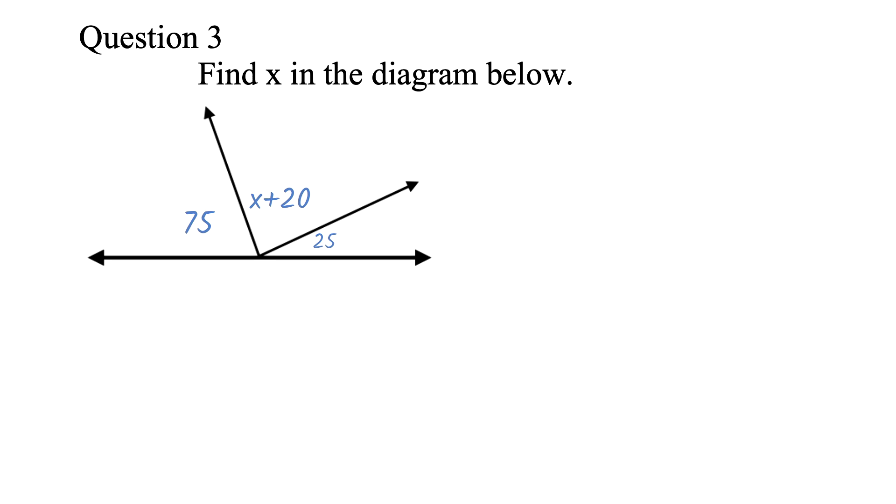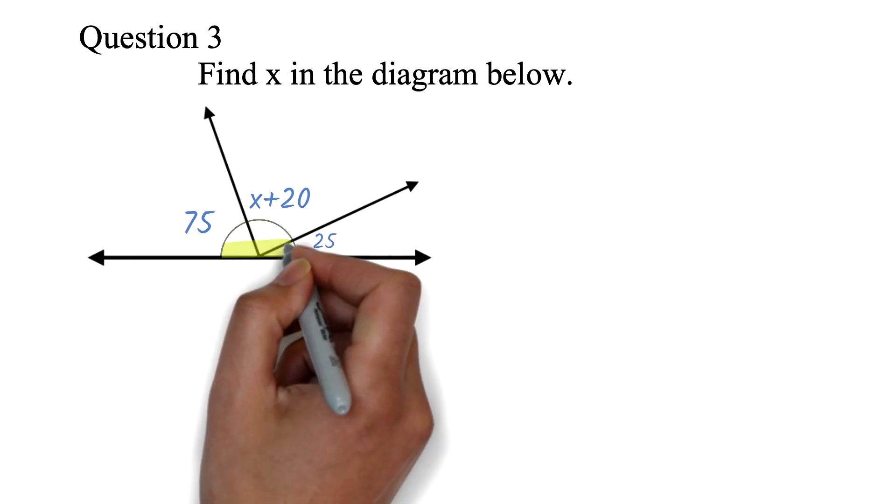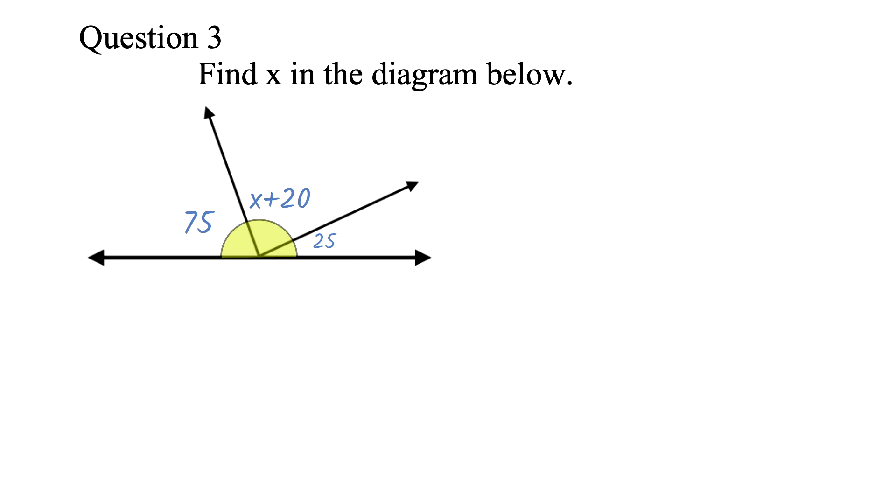Question 3. Find x in the diagram below. The work here is being able to identify that this is angles on a straight line. Angles on a straight line adds up to 180 degrees. Once you know that, you will just add everything and equate it to 180. Then solve the resulting equation.